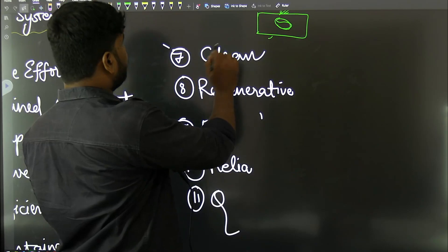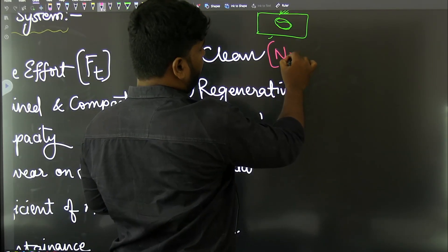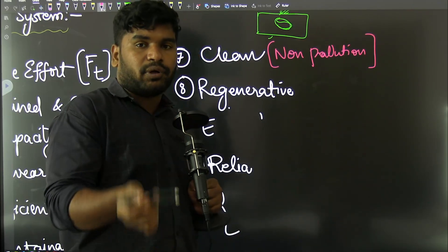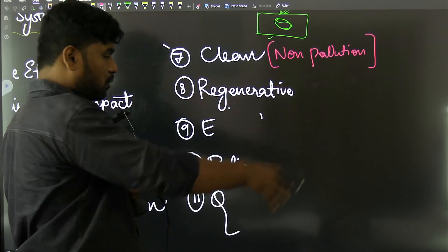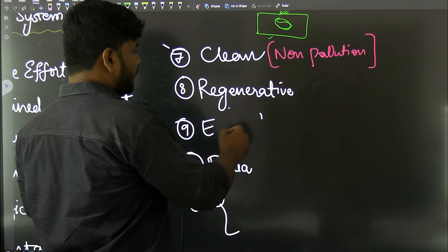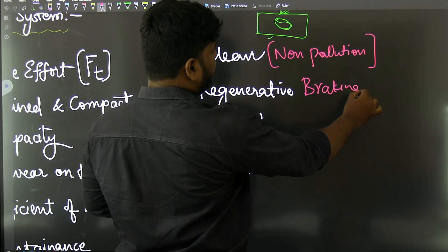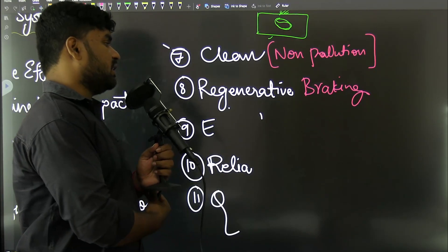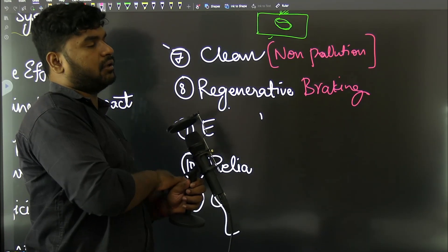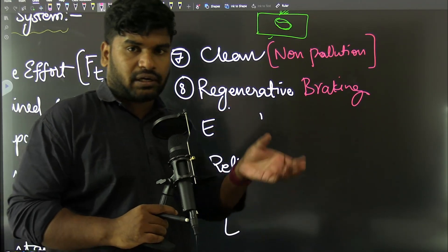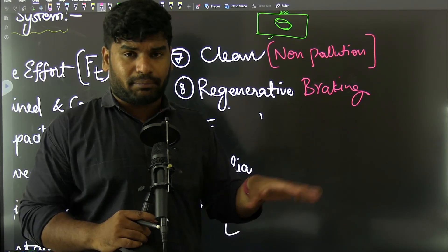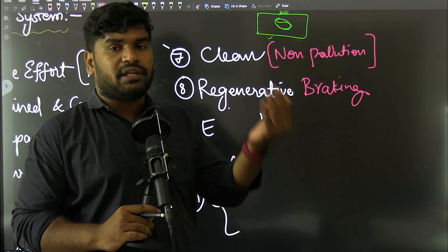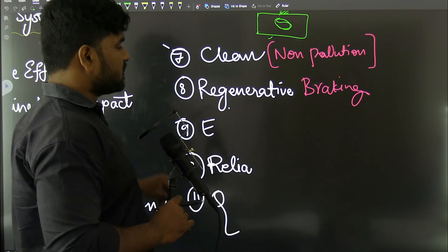The next quality is that it should be clean — basically non-polluting — so as not to cause pollution in the area. Another important quality is the Regenerative Braking option. Regenerative braking means the vehicle regenerates energy during braking and stores it. For example, top-end Mercedes-Benz cars have this option. When the vehicle is braking, it regenerates energy and stores it in the battery.